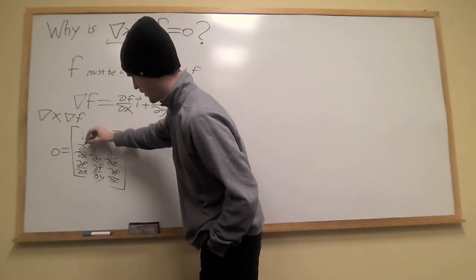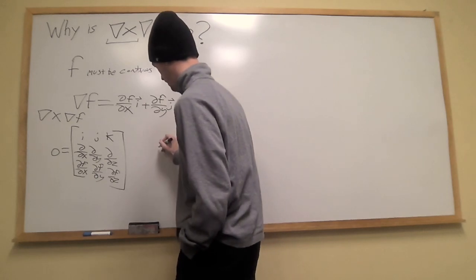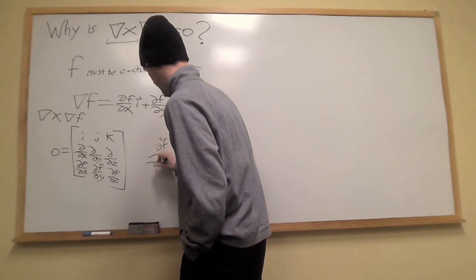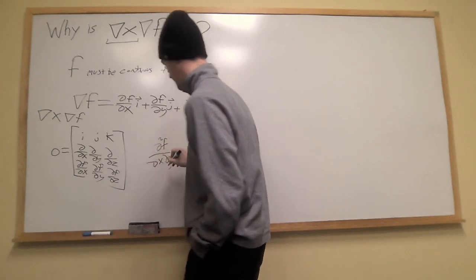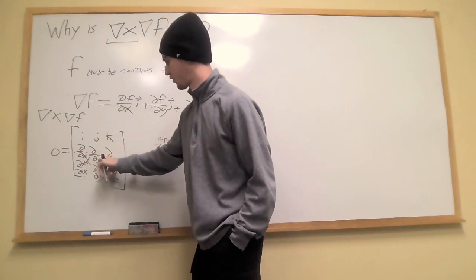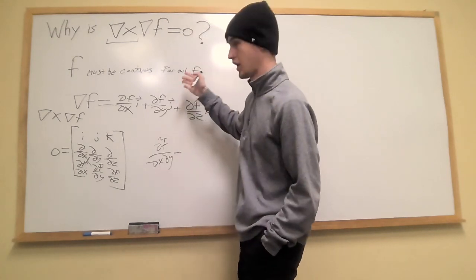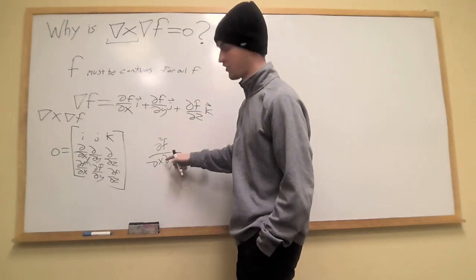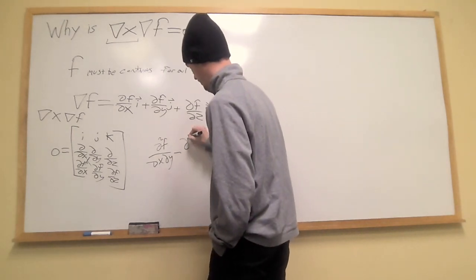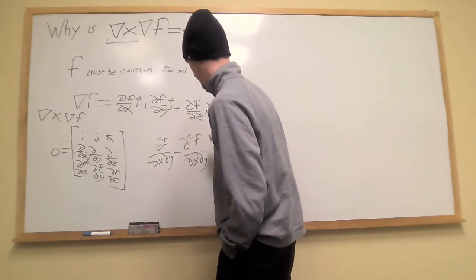For the i component, we have partial partial x times partial f partial y, which gives us partial squared f partial x partial y, minus partial partial y times partial f partial x, and you'll see this is the same thing. Given that f must be continuous, it does not matter which order you take spatial derivatives in. So you end up with the same thing, partial squared f over partial x partial y, and that's your i component.